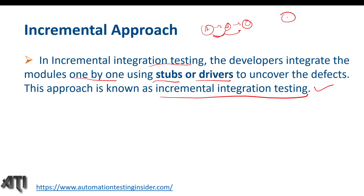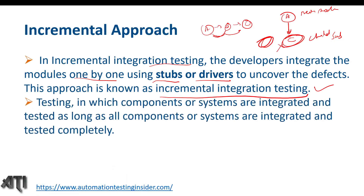Let's say we have a main module and a sub-module (child module). We want to integrate them, but one module is still under development. In that case, we create a temporary program called a stub to substitute for the unfinished sub-module, so we can still perform integration testing. We'll discuss this in more detail in the coming slides.